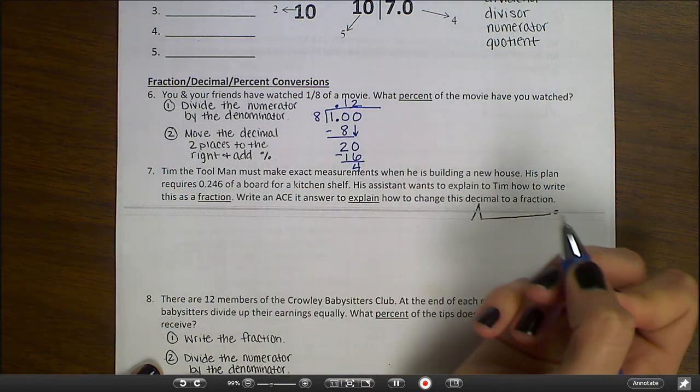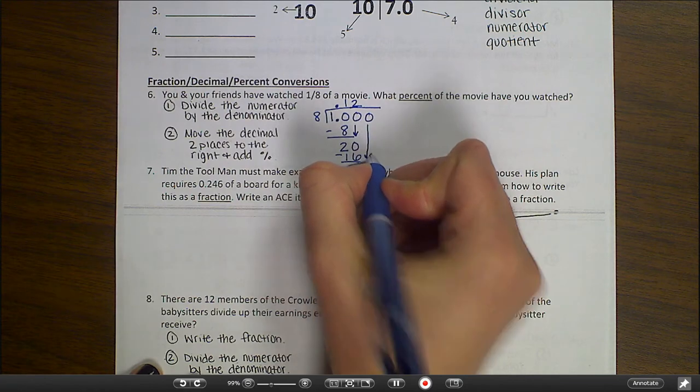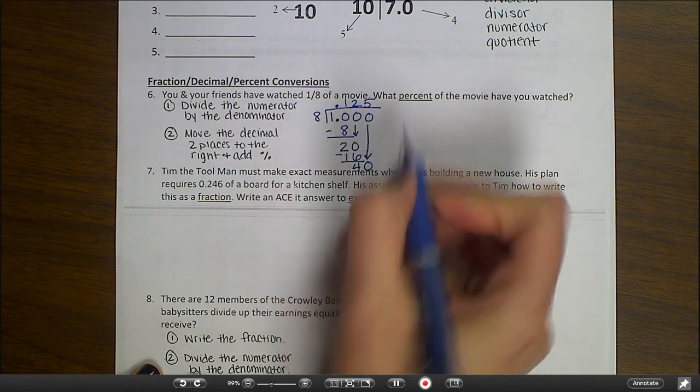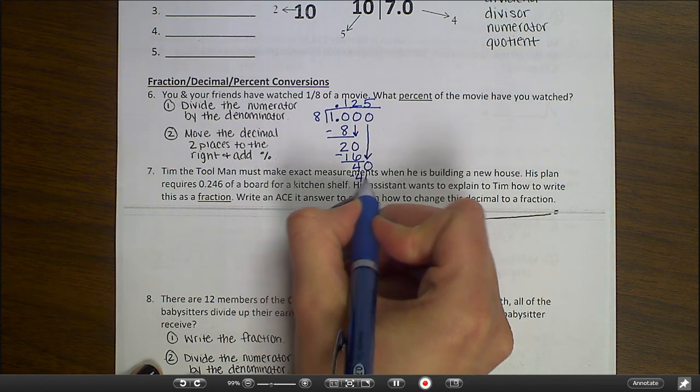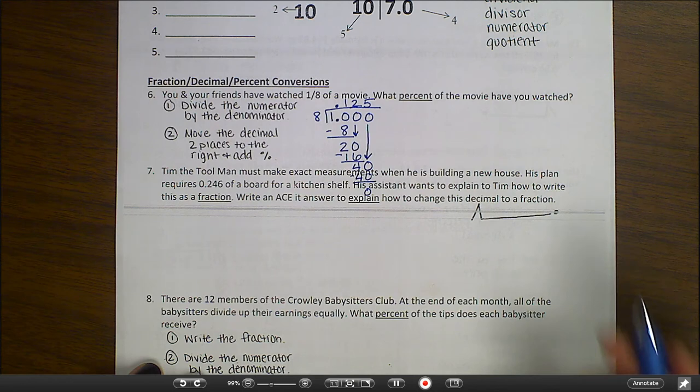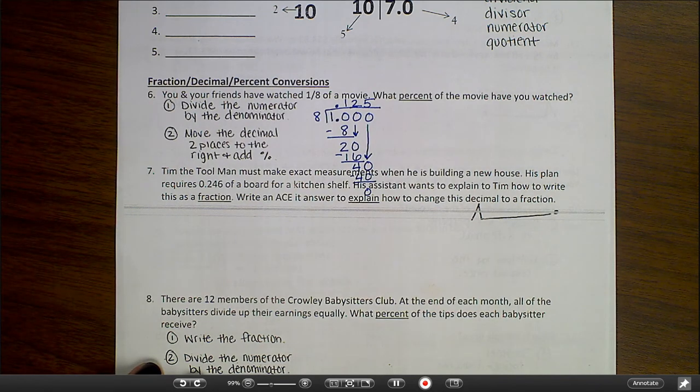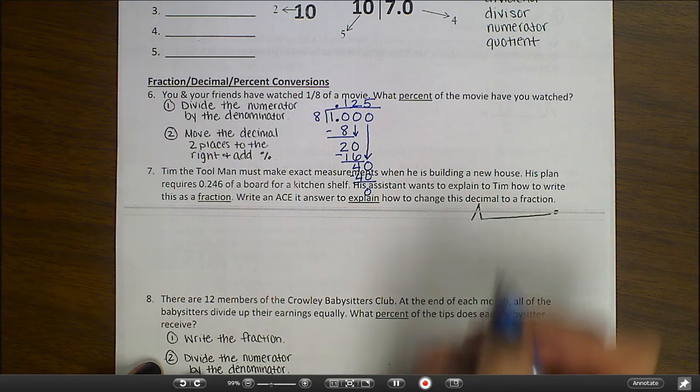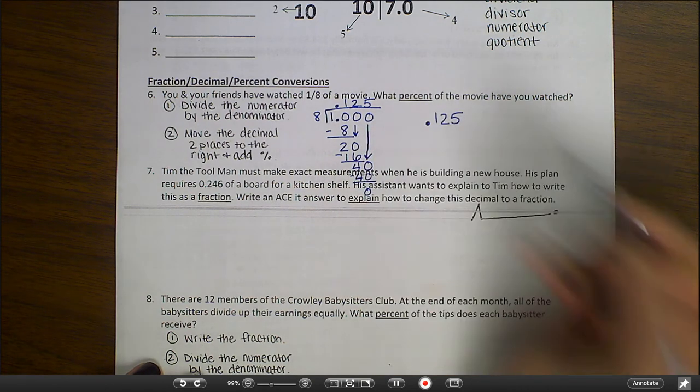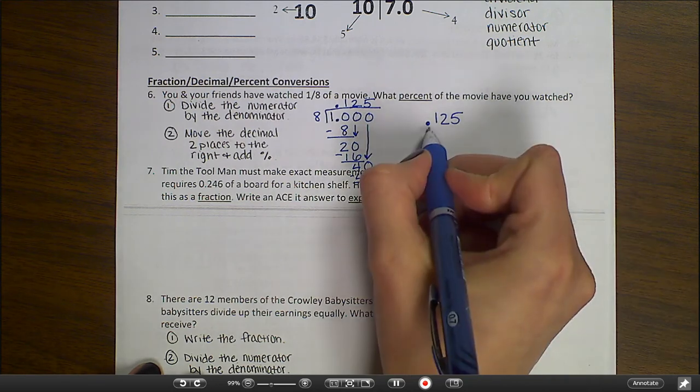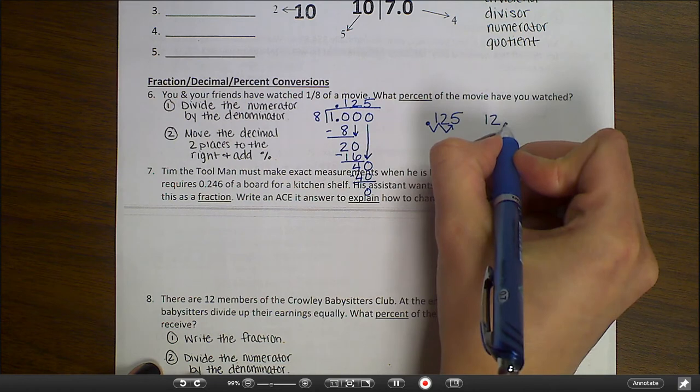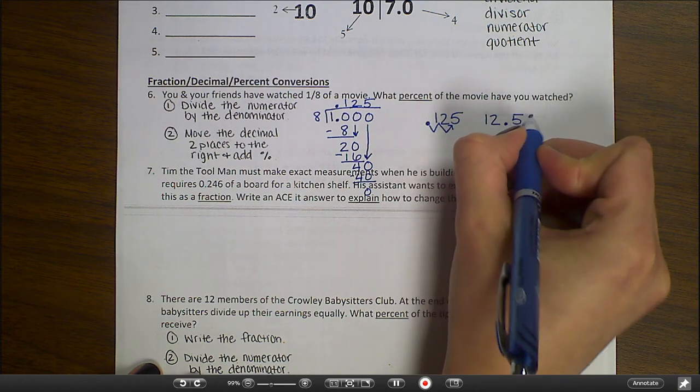Follow along as I complete this division problem. Notice that when I have a remainder, I need to add a 0 and bring it down to continue dividing. Now I have a decimal. My next step is to move the decimal point two places to the right and add a percent sign. So if I have 0.125, I'm going to end up with 12.5 percent.